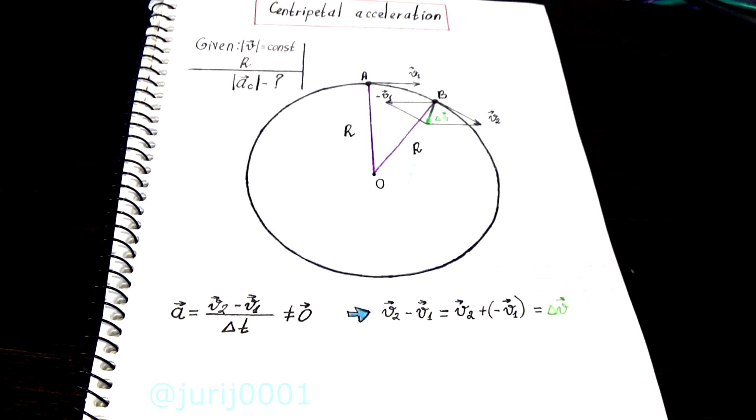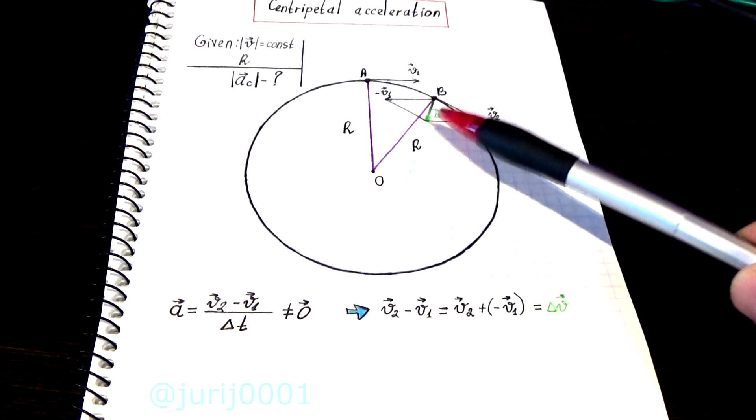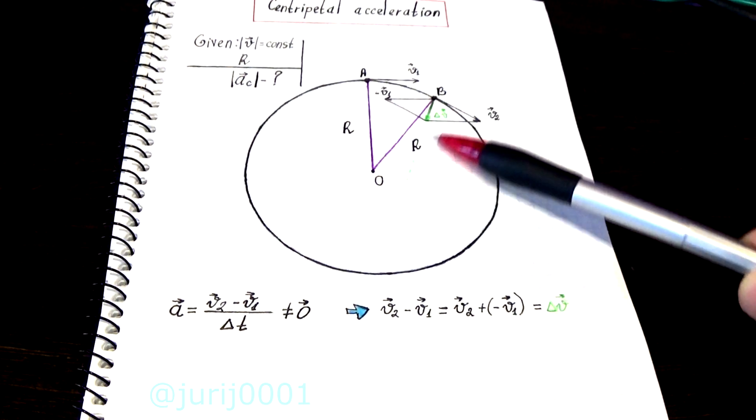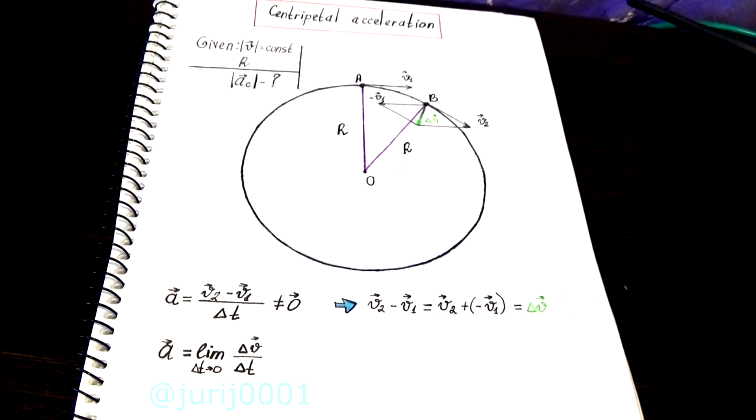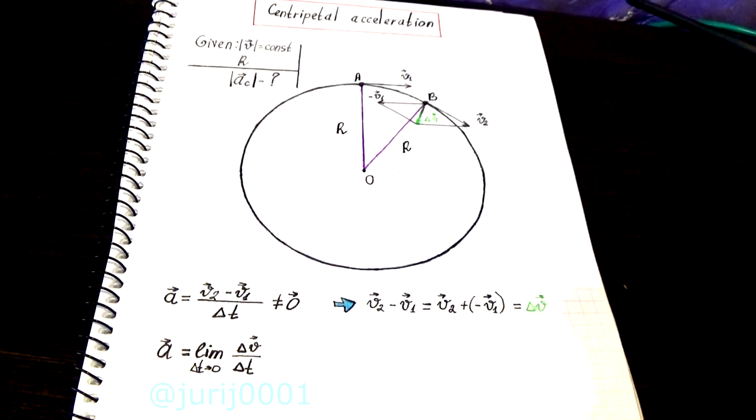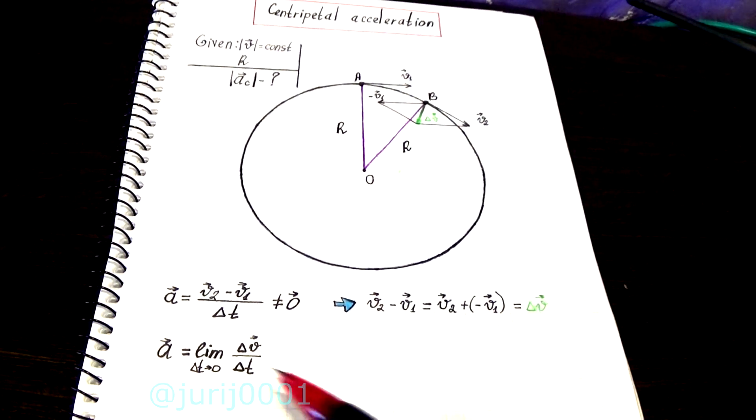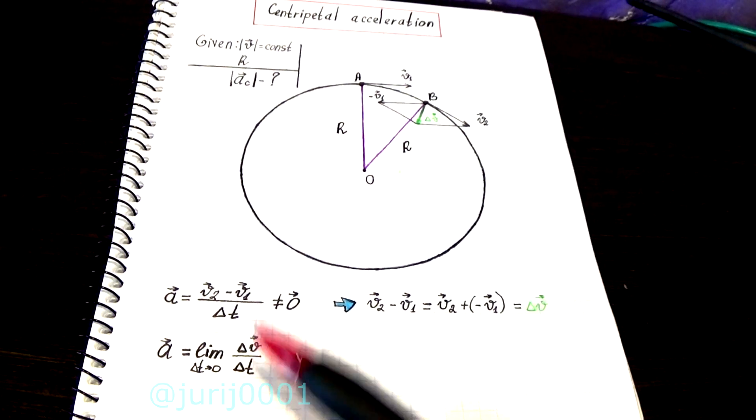It moves slightly away from the point O. In fact, the acceleration is determined as the limit of delta V by delta T as the time interval tends to zero.